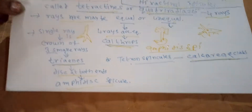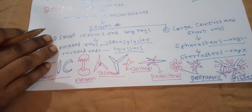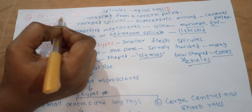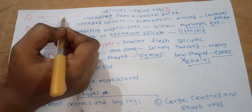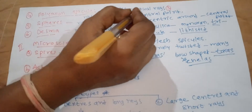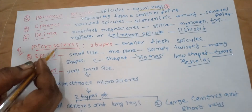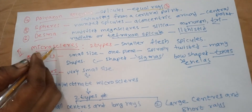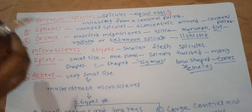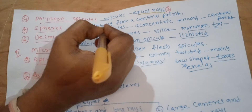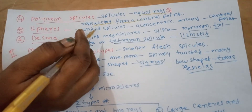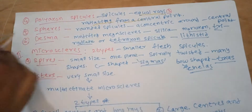Fourth type: polyaxon spicules. These are spicules with several equal rays radiating from a central point. These are called polyaxon spicules.